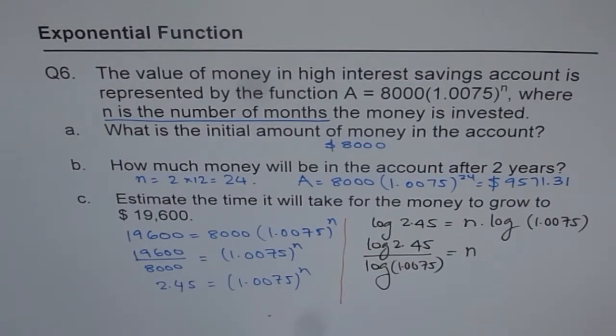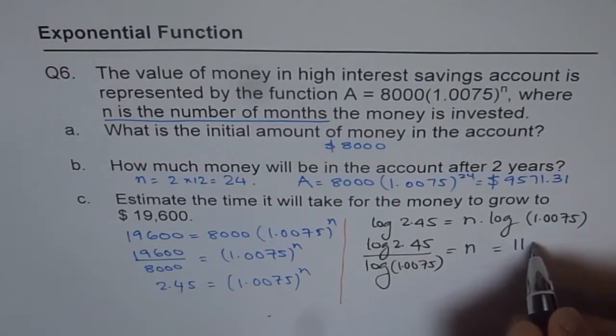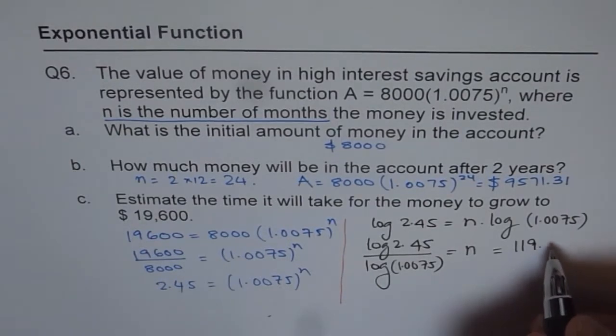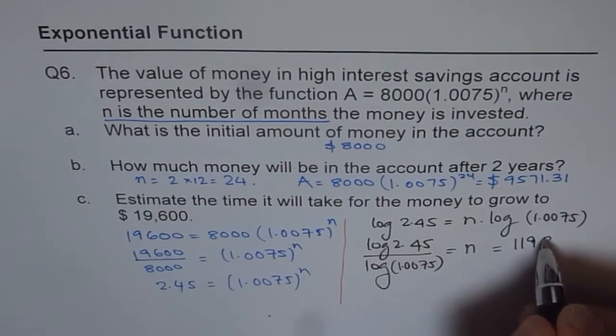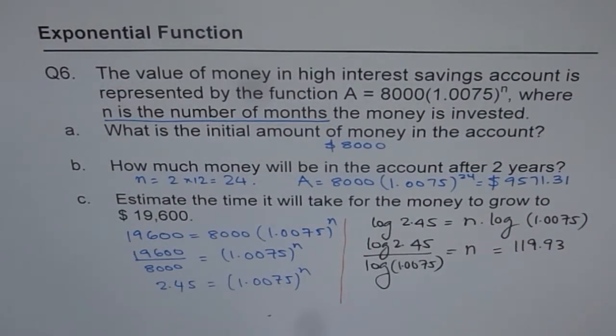So, we can just type in the log of 2.45 and then divide it by log of 1.0075 to get the answer. It gives us 119.925. So, we can write N as 119.925. So, I could have rounded to, let me write 119.993 for the time being.